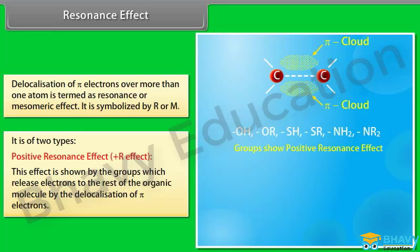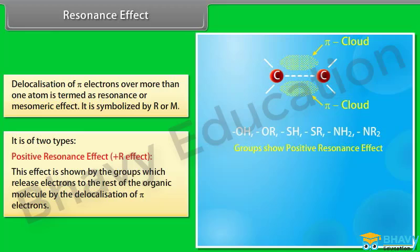The positive resonance effect (positive R effect) is shown by groups which release electrons to the rest of the organic molecule by delocalization of pi electrons.